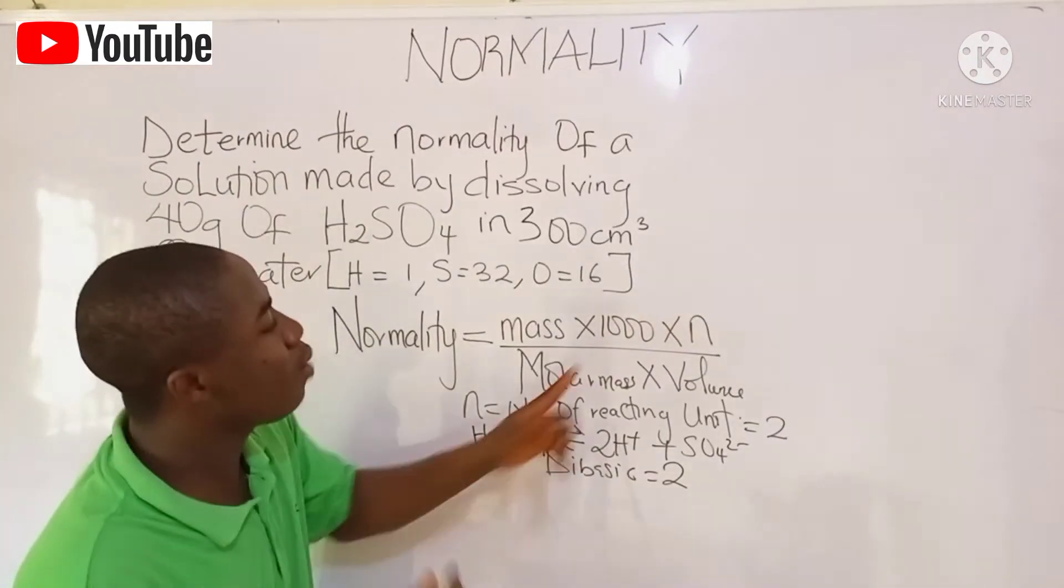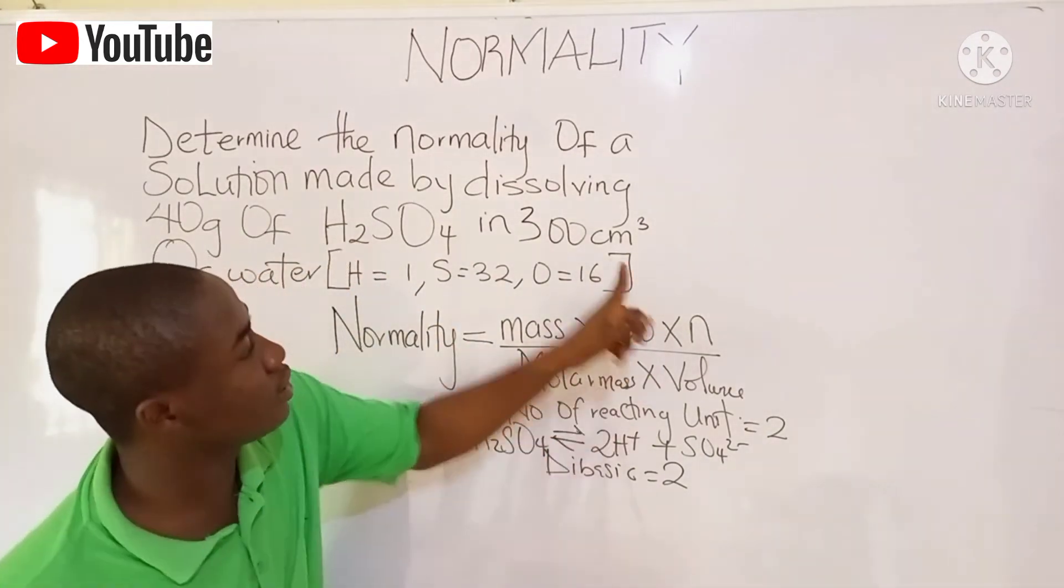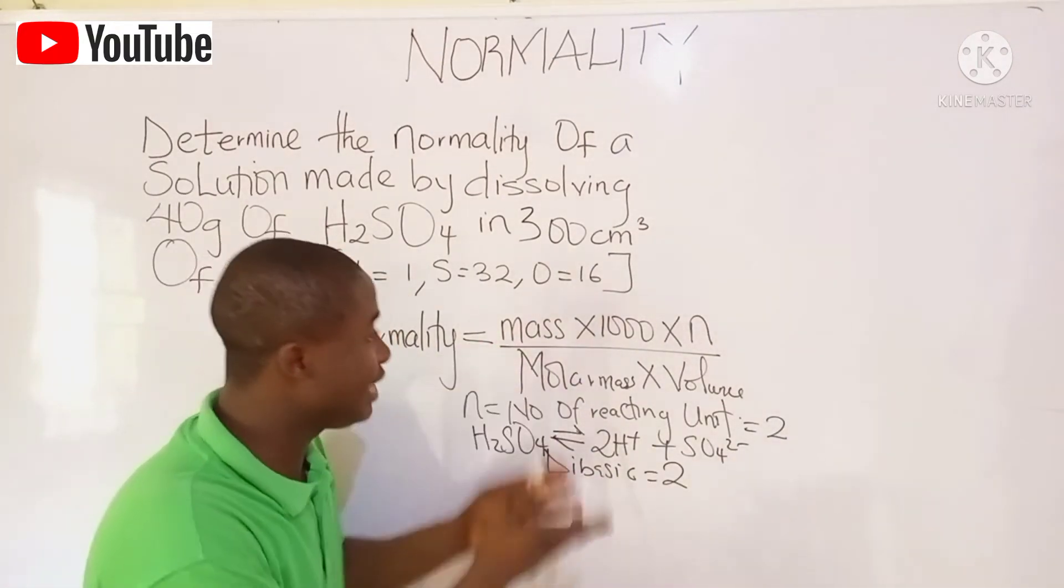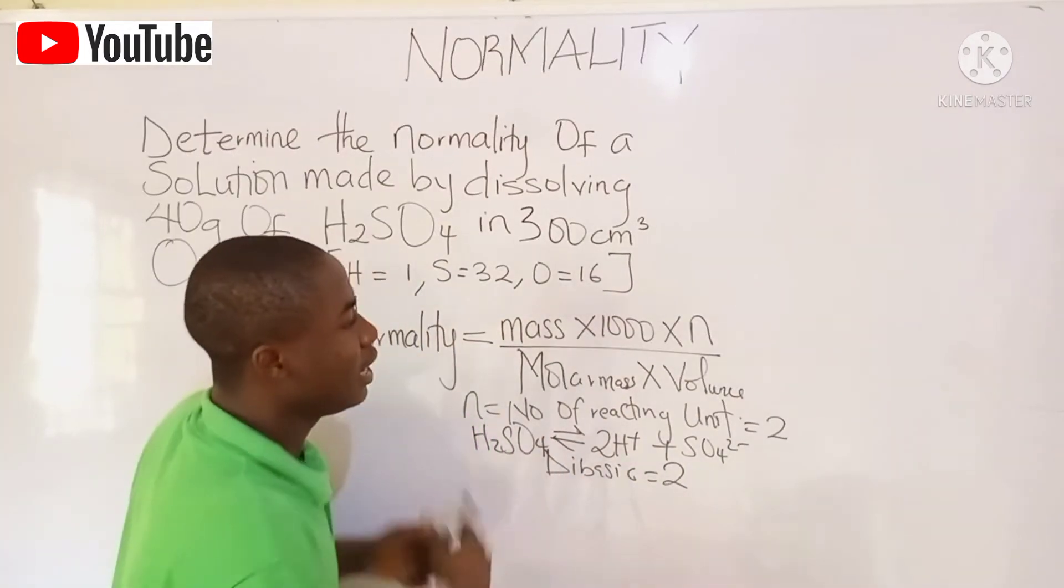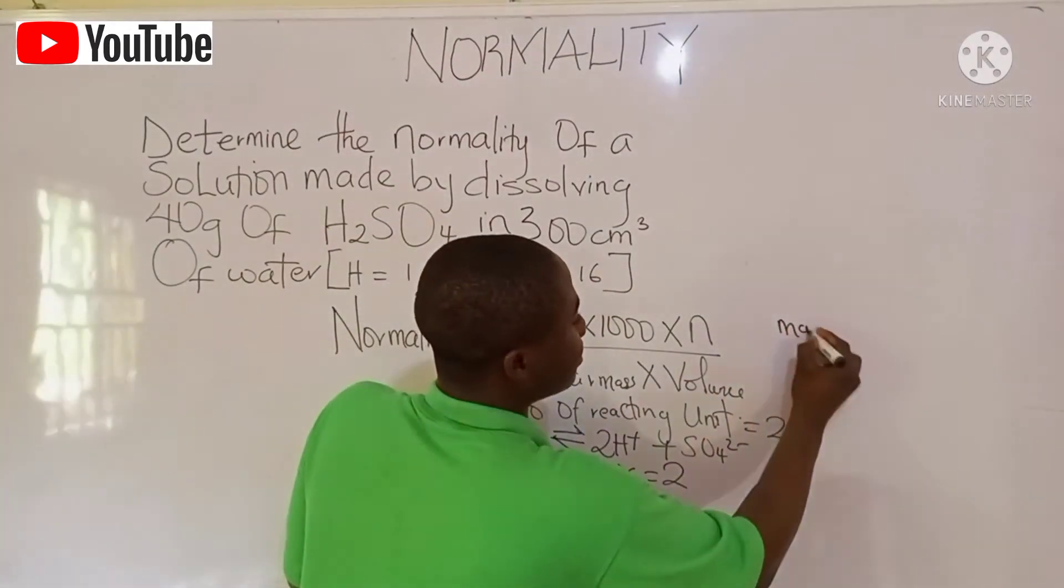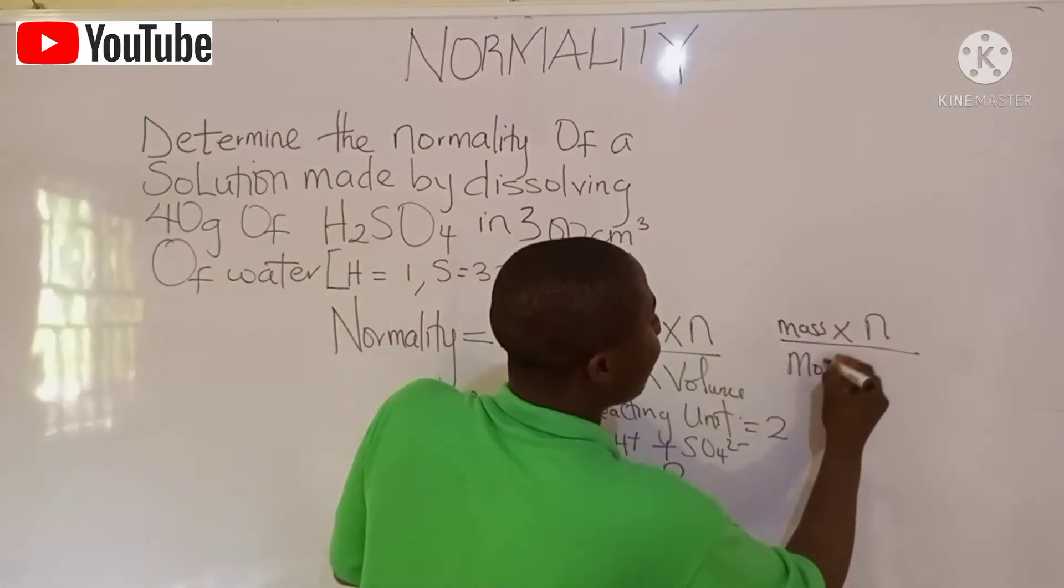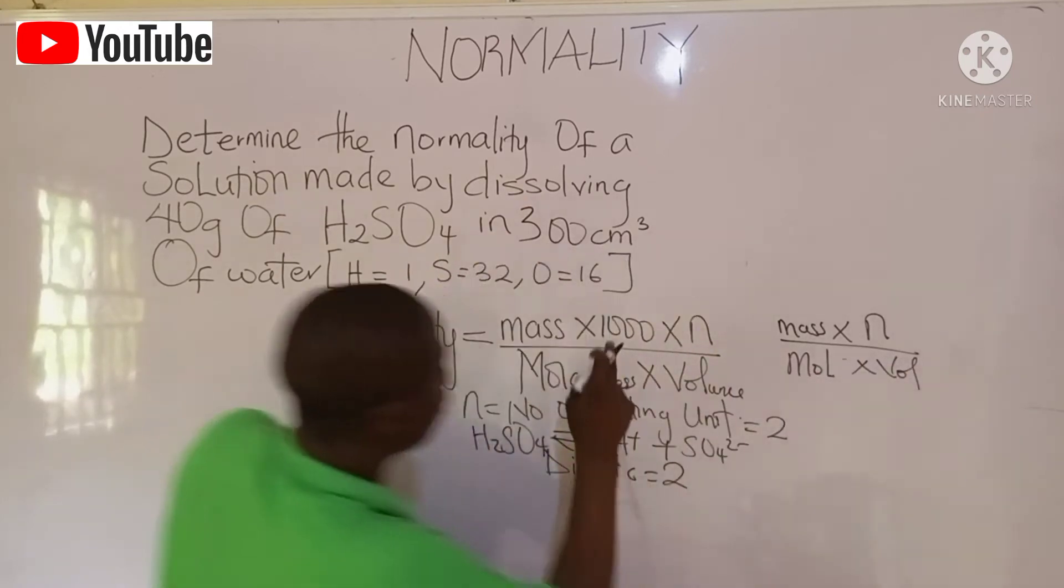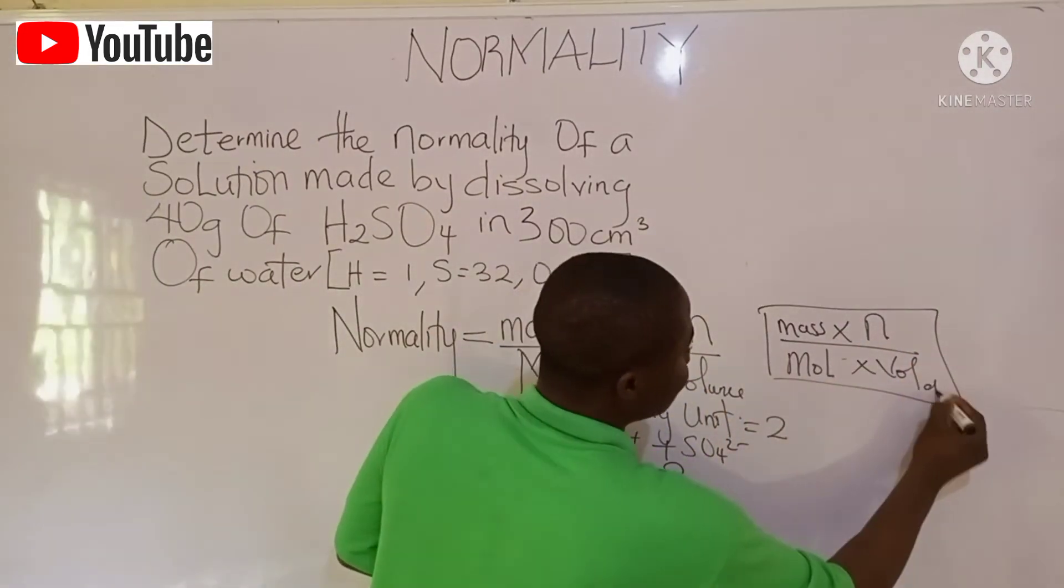Now, you can see 1,000 was added to the formula. Why? It is because the volume is in cm³. If the volume was in dm³, 1,000 will not be included in the formula. The formula becomes mass times N over molar mass times volume. 1,000 will not be included in the formula if the volume was in dm³.